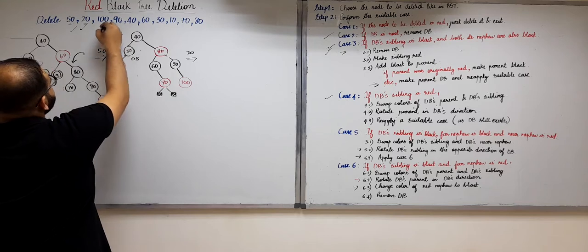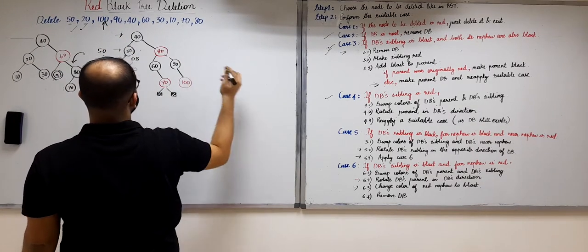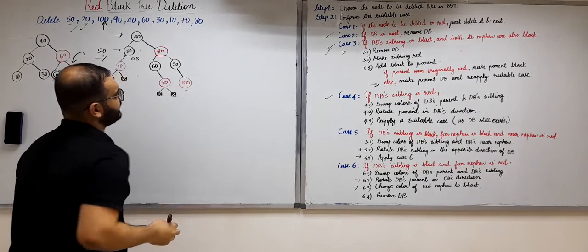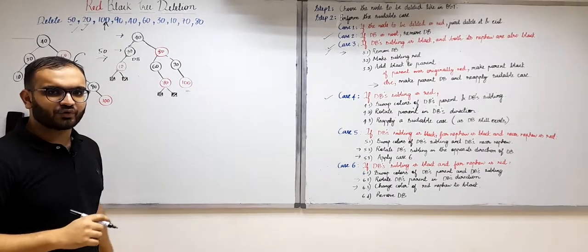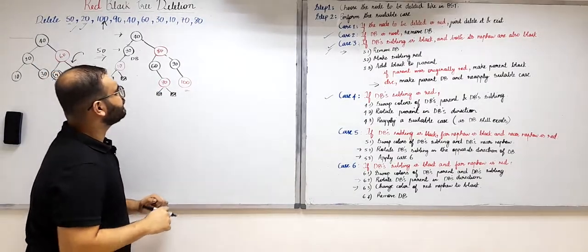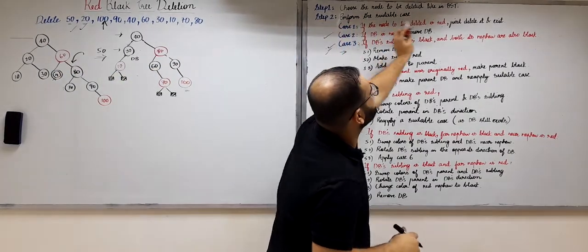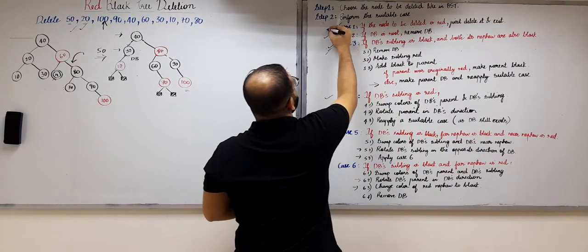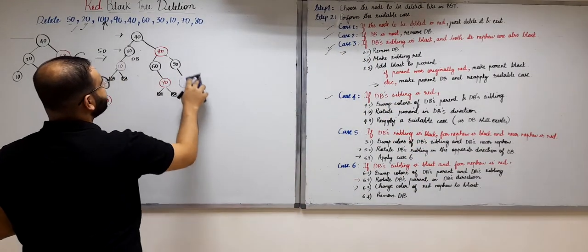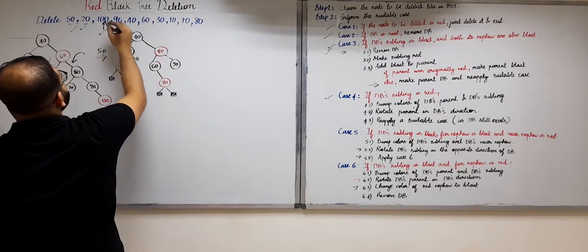The next element to be deleted is 100. Since 100 is a leaf node and also a red node, we can simply delete it by following Case 1: if the node to be deleted is red, just delete it. So we just delete it and exit. Now 100 is also deleted.